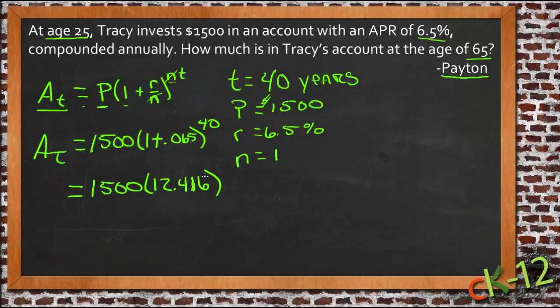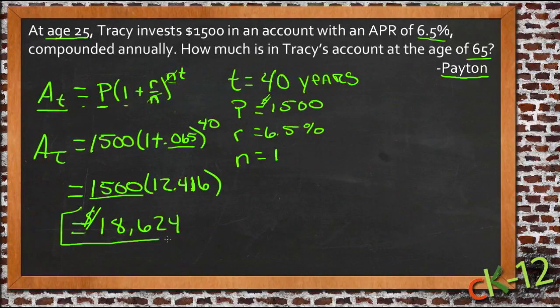So that'll mean we'll have 1,500 times 12.416, which is $18,624. That says that if she started with $1,500 and she invested it at 6.5%, then every year it would be 1 and 6.5% bigger than it was for 40 years. After 40 years, the amount of money that she has in that account is going to be $18,624, and that's assuming she never adds anything else at all. She just started with $1,500 and just left it there, and over time it would grow on its own up to that $18,500.